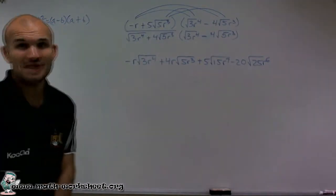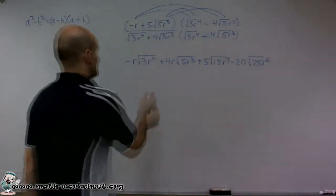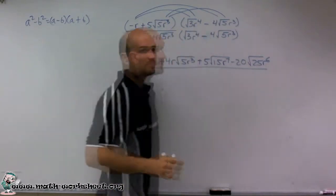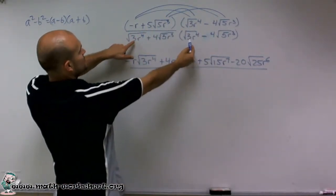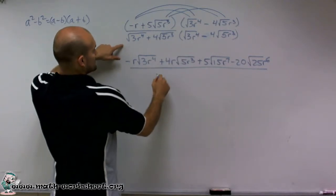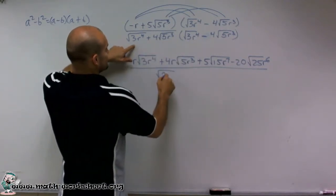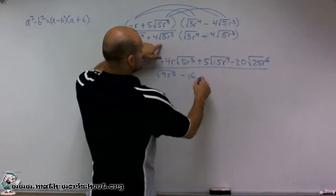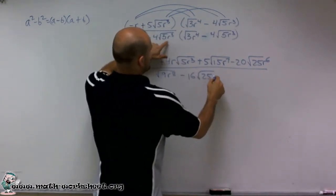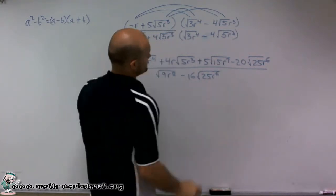So that was all the top. It's a lot. Now let's go to the bottom, which is easier because I can apply the rules of difference of two squares. Here I can multiply my two radicands. So I have the square root of 3 times 3, which is 9, r to the eighth, minus 16 times the square root of 25r to the sixth.